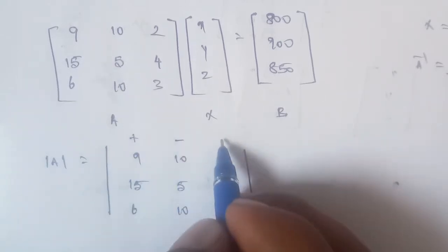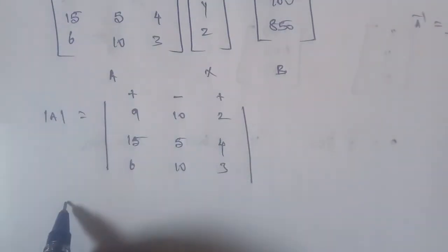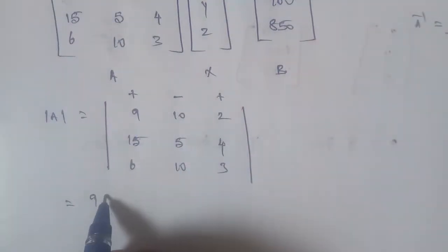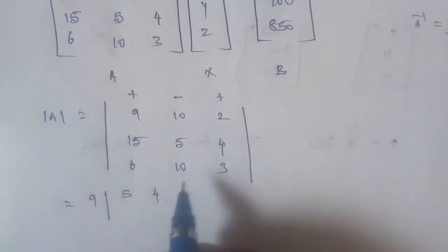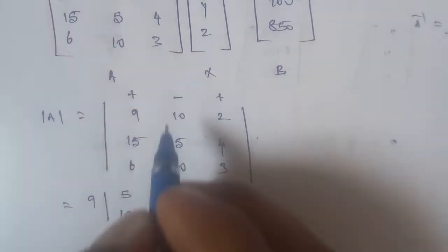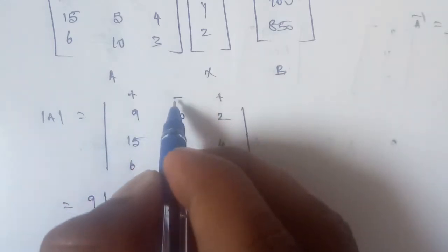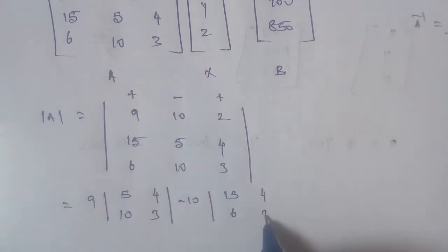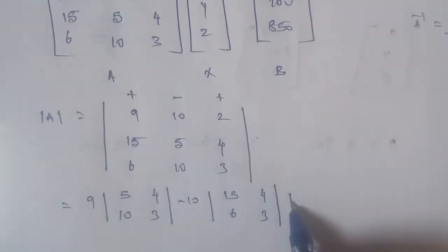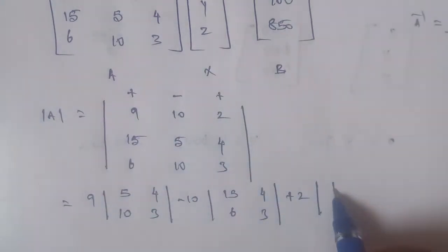Applying the sign pattern: this element is plus, this is minus, this is plus. For the determinant, element 9 covers the row and column — the remaining 2x2 is [5, 4; 10, 3]. Element minus 10 covers the row and column — the remaining 2x2 is [15, 4; 6, 3]. Element plus 2 covers the row and column — the remaining 2x2 is [15, 5; 6, 10].